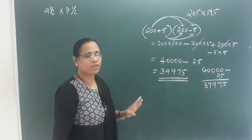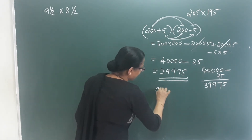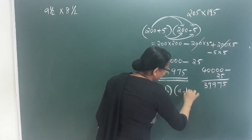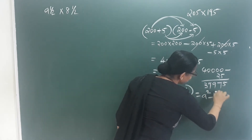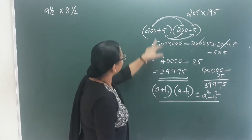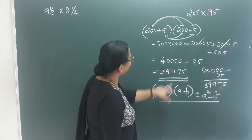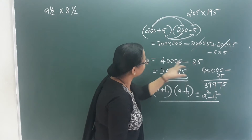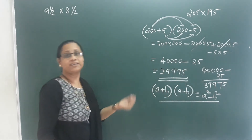It is a plus b into a minus b, that is equal to a square minus b square. How many zeros do we have? 200 square minus b square. Here we have to answer this identity, which we covered in the last class.